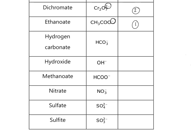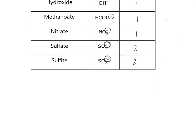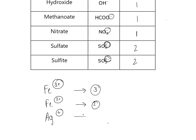Working down the table: hydrogen carbonate has a charge of −, so valency is one. Methanoate is 1−, valency one. Nitrate has a charge of −, valency one. Sulfate has a charge of 2−, so valency is two. Also on the back of the periodic table, Fe³⁺ gives a valency of three, Fe²⁺ gives valency two, and Ag⁺ gives valency one. For all ions — positive or negative — just look at the number of the charge to get the valency.